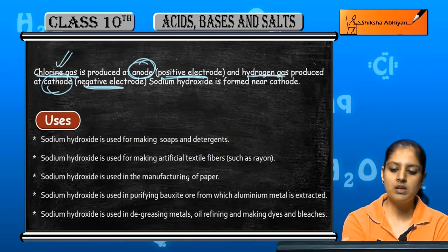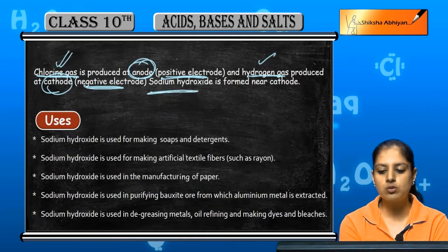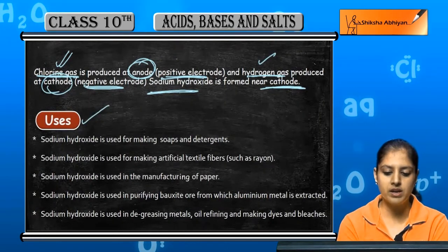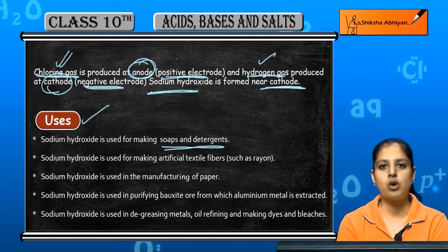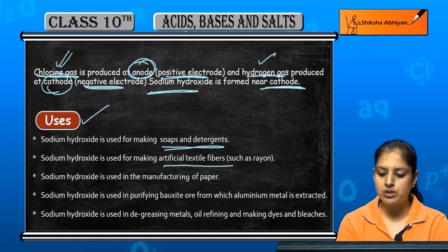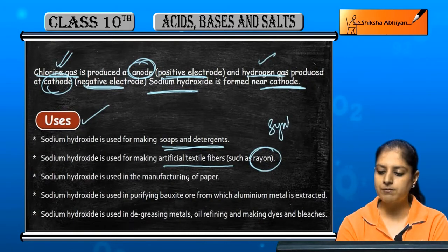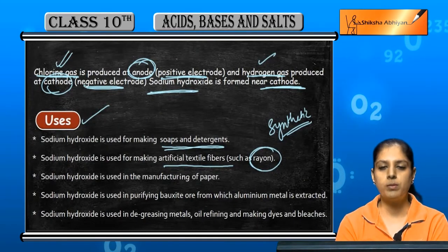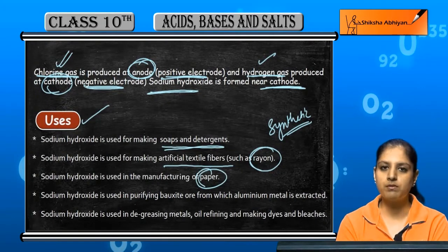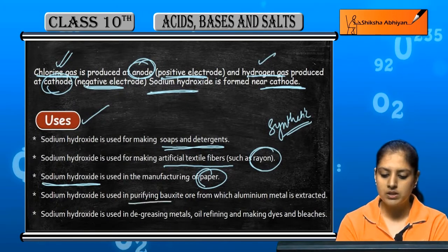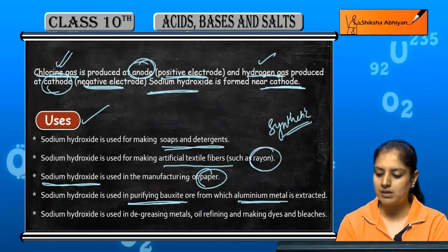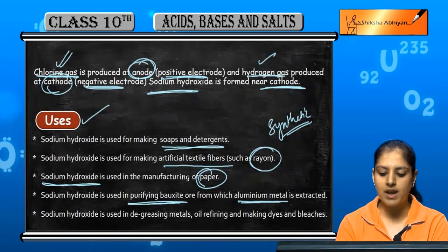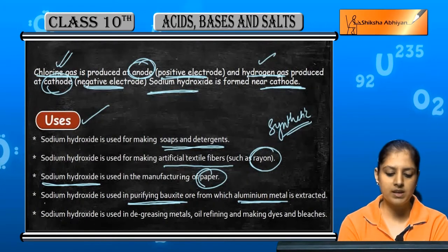The uses of sodium hydroxide: it is used in making soaps and detergents, and for making artificial textile fibers such as rayon, which are synthetic fibers. It is used in the manufacture of paper. It is used in purifying bauxite ore, from which aluminium metal is extracted. Since the ore is not pure, we use sodium hydroxide to purify it.